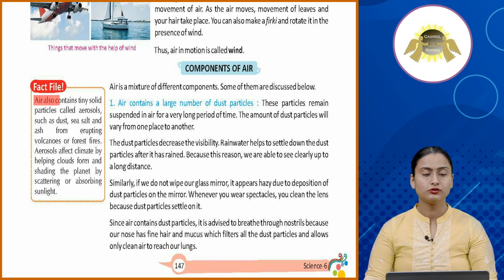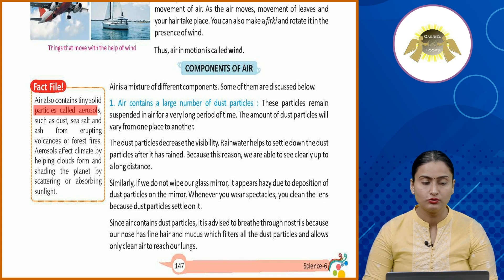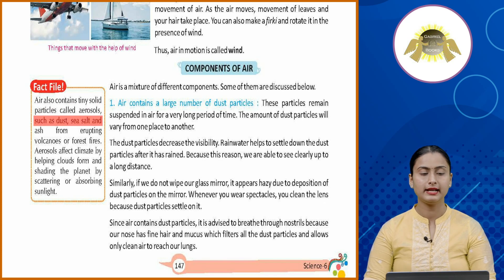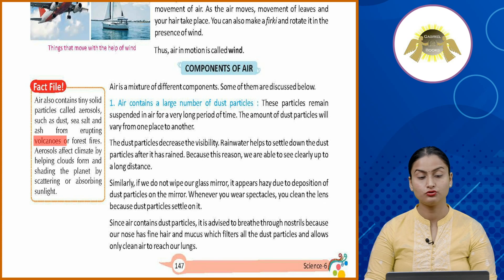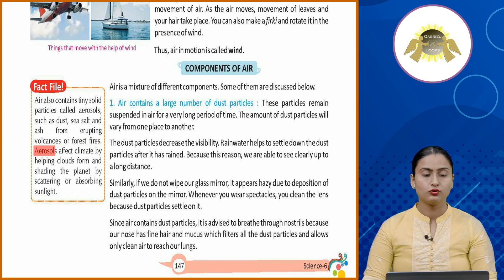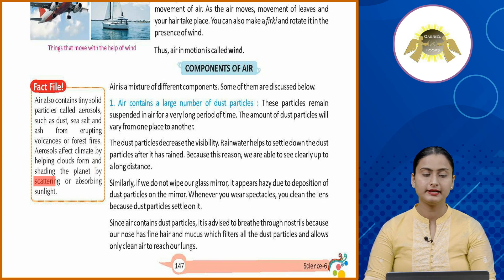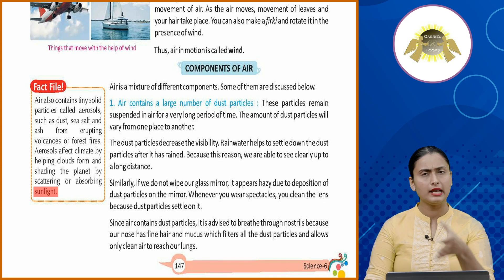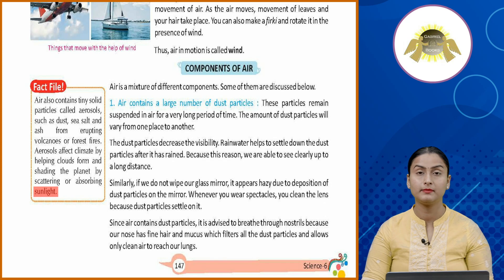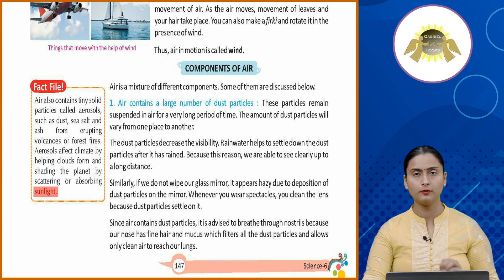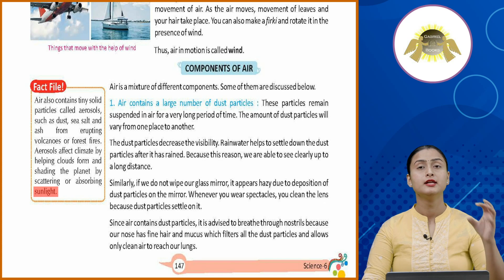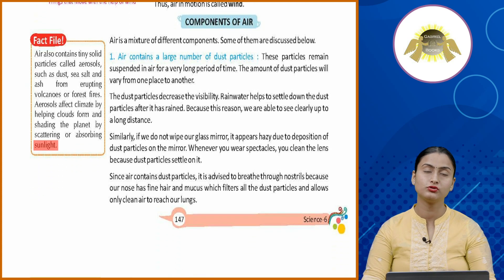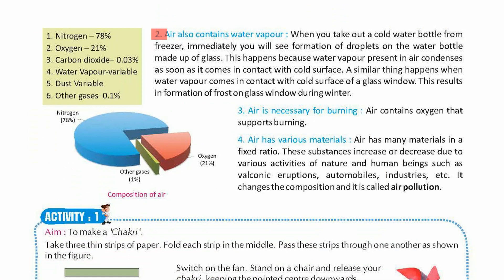Fact file: Air also contains tiny solid particles called aerosols, such as dust, sea salt, and ash from erupting volcanoes or forest fires. Aerosols affect climate by helping clouds form and shading the planet by scattering or absorbing sunlight. They also help absorb harmful gases from volcanic eruptions and protect us from the harsh rays of the sun.